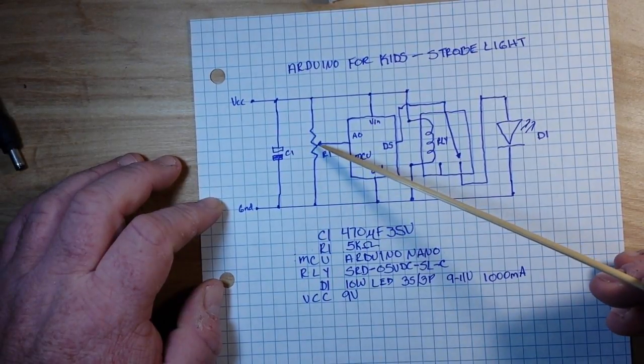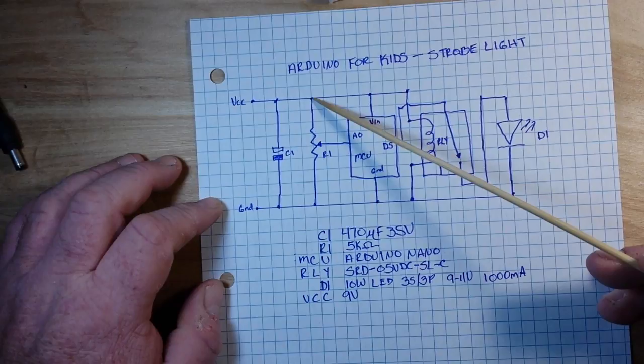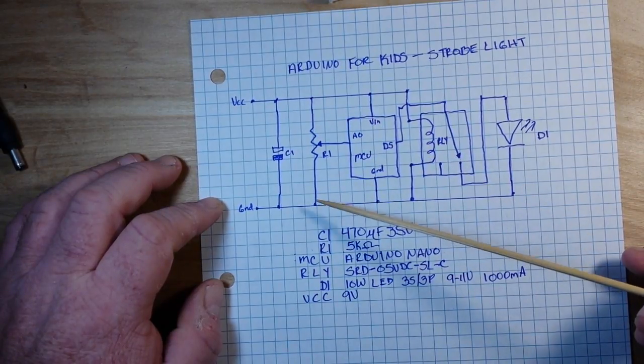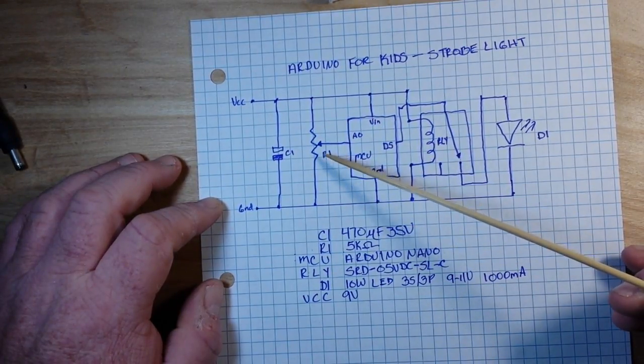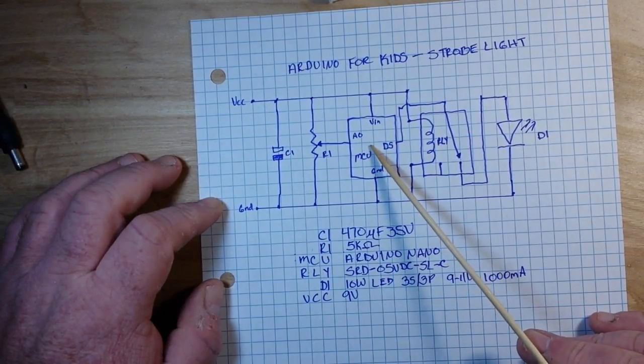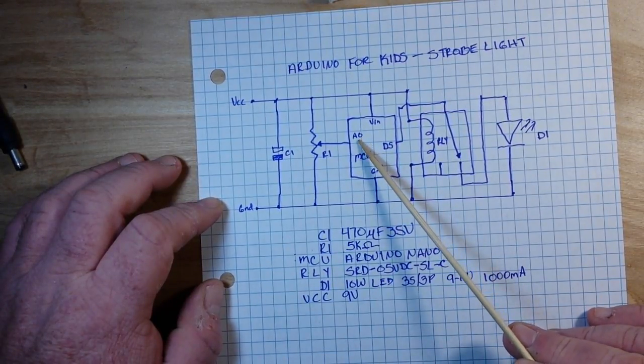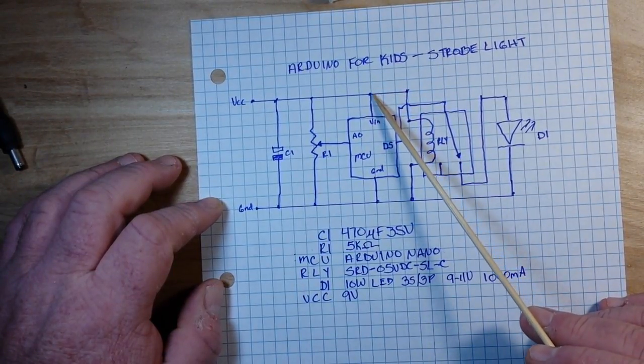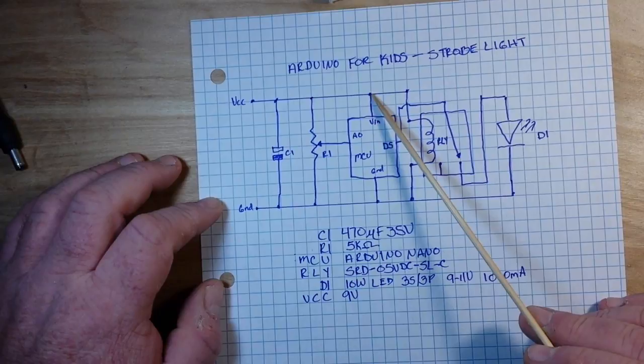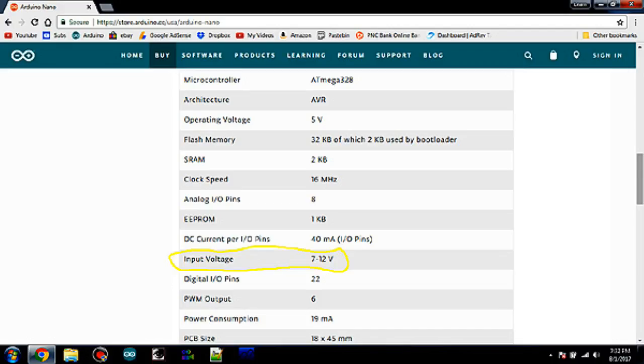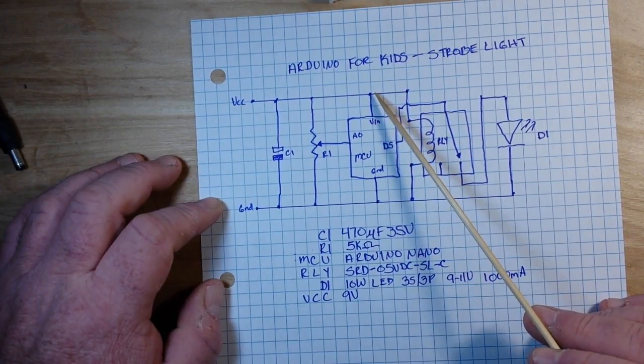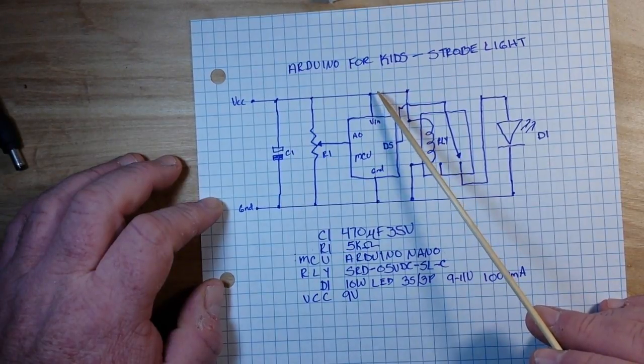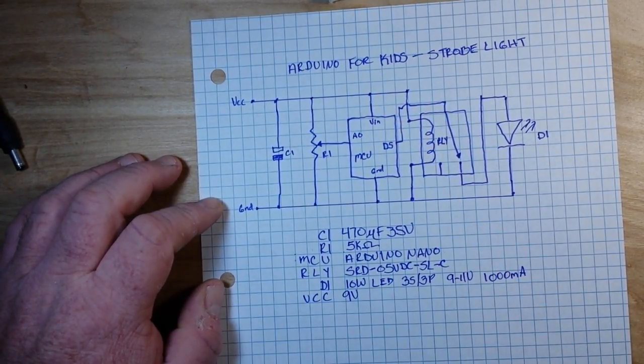Next we have our 5k potentiometer. One connection goes to VCC, the other goes to ground, the middle connection, the wiper, comes over here to our Arduino Nano and it's connected to pin A0. The Nano is also connected to our VCC rail through the VN pin. Since we're giving it 9 volts here, it's very important that we connect it to the VN pin and not the 5 volt pin, because the 5 volt pin bypasses the voltage regulator and would probably damage your Arduino.